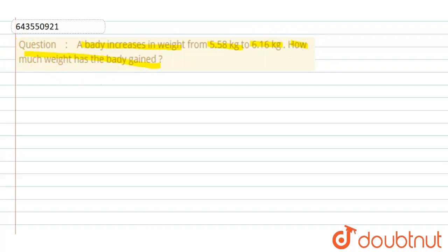In this question, it is given that a body increases its weight from 5.58 kg to 6.16 kg. Here we have to find the weight gain. So it is given that the initial weight of the body is...